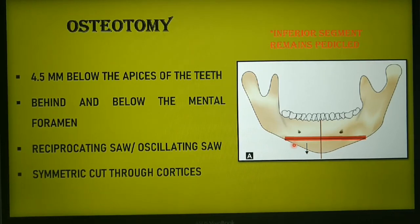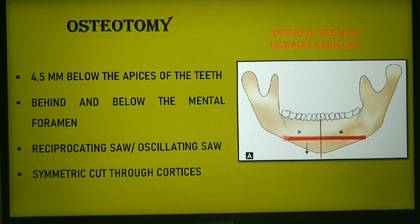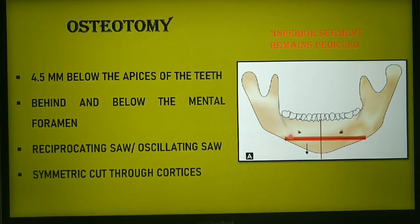The posterior ends of the osteotomy should be positioned below and behind the mental foramen on both sides. Make sure the cut is symmetric through the buccal and lingual cortices throughout — there should be no incomplete osteotomy; the cut should be complete through both cortices.